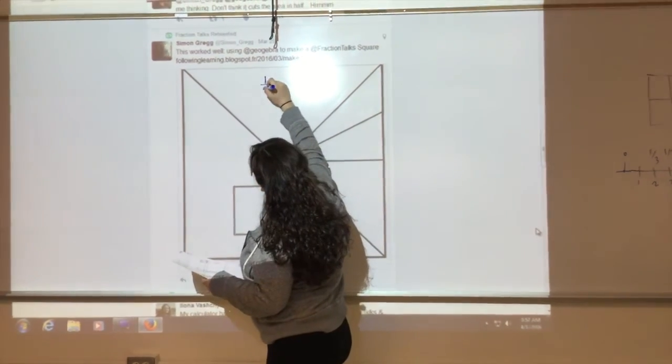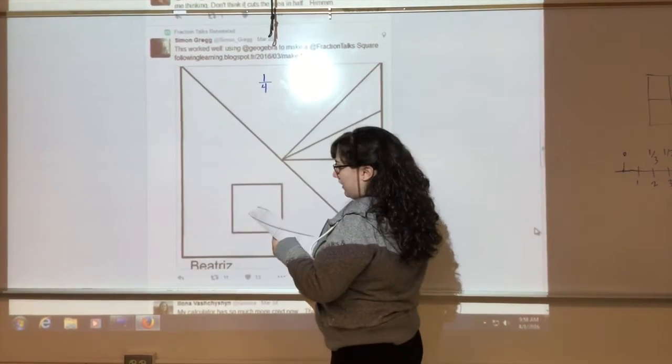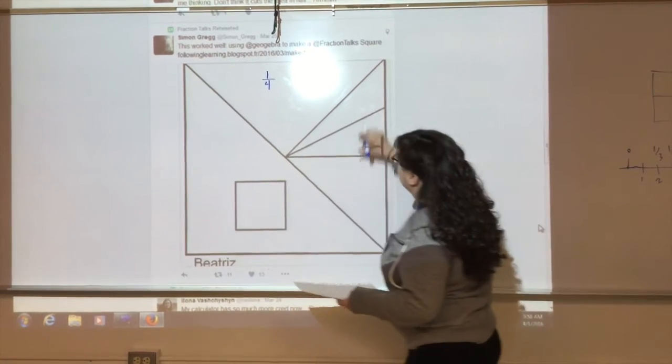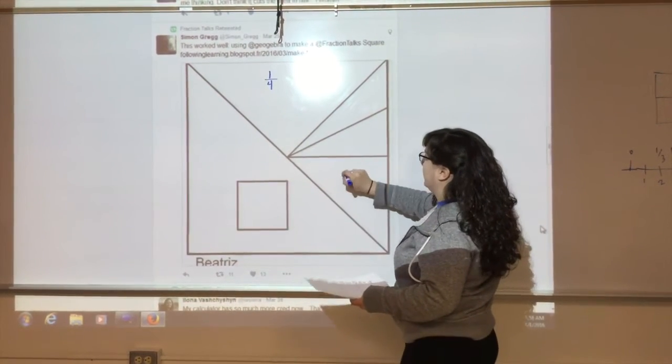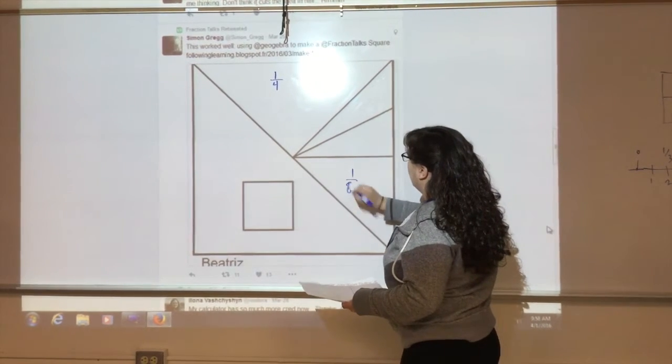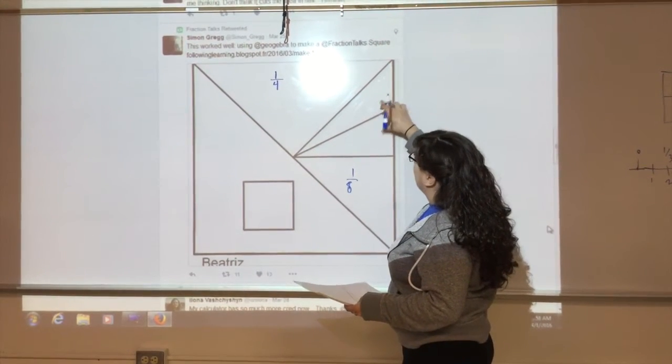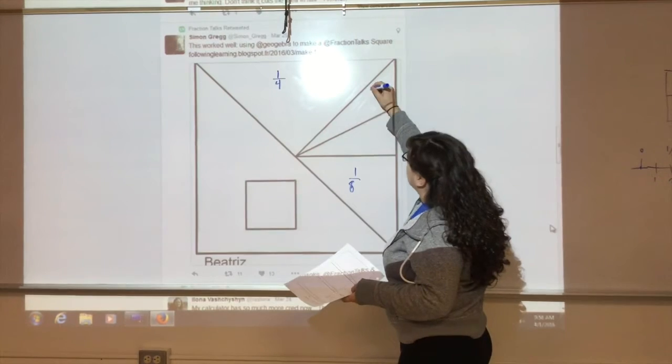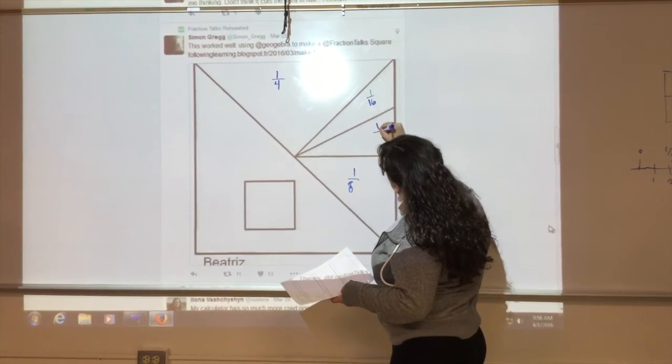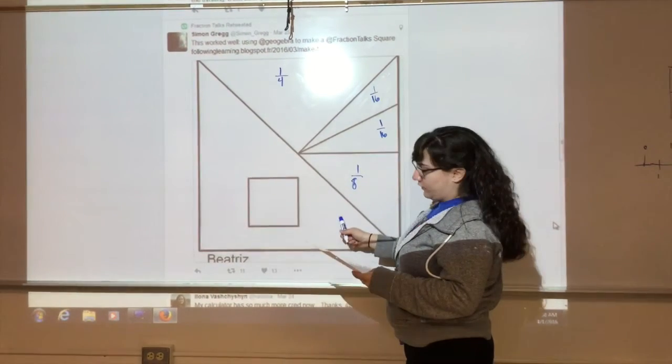And then because we've taken half of this fourth, this part would be an eighth. And then these two are split in half, this eighth is split in half, so these would be sixteenths.